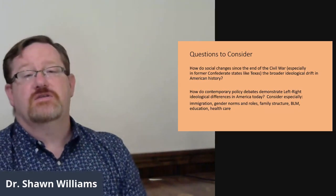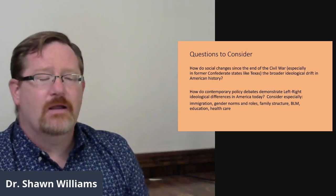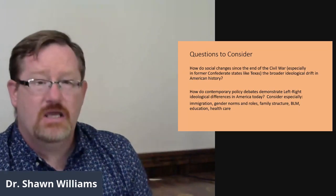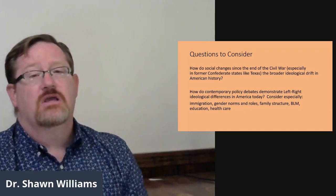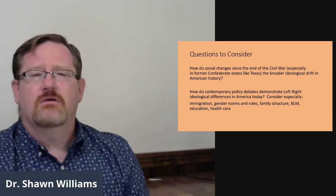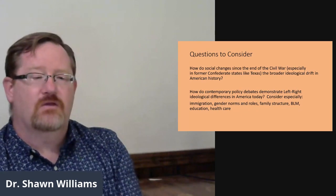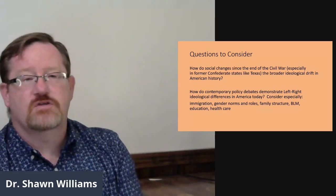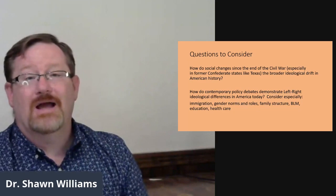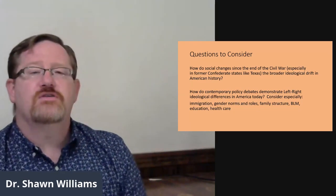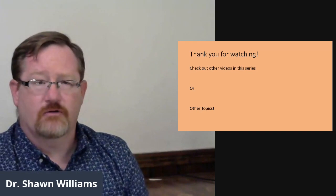So here are a couple of questions for you to consider as you're thinking about whether you want to go ahead and move on to the second video, the third video in this lecture. First of all, think about how the American society has changed since the end of the Civil War. Particularly think about how former Confederate states like Texas have changed in their broad ideological drift over the last 200 years. Voting is an example, but there are others. Something else to consider is how does the contemporary policy debate in the United States demonstrate this left versus right continuum. So think about topics like immigration, gender norms, gender roles, family structure, the Black Lives Matter movement, education policy, health care policy. All of these are built more or less around this left versus right structure. So think about that and consider that as a topic for future consideration.